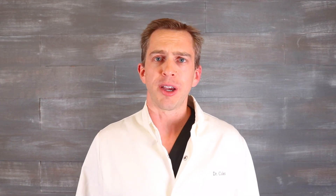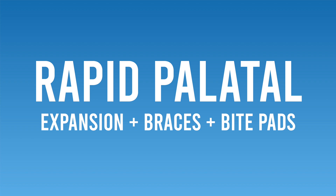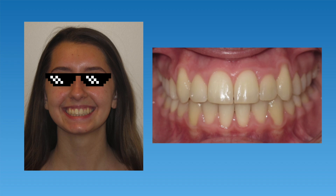There are times when patients will have a combination of posterior and anterior crossbite. This patient shown here is a good example — the back teeth on the upper arch are too narrow compared to the lower teeth, which is a posterior crossbite, and one front tooth on the top is sitting behind the front teeth on the bottom, which is an anterior crossbite. A combination of rapid palatal expansion, braces, and bite pads were used to treat this patient, resulting in full bite correction and a great result.